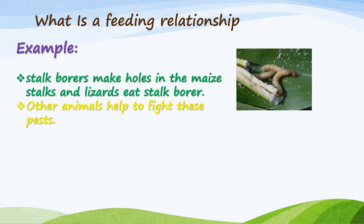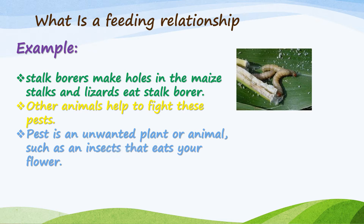Remember that if one thing is less, the other thing will be more — so it should be a balance. A pest is an unwanted plant or animal, such as an insect that eats your flowers. Stock borers are a pest because they eat your flowers and plants.